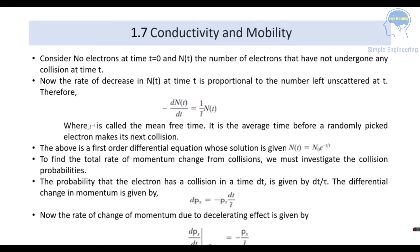To find the rate of momentum change from collisions, we check the collision probabilities. The probability that an electron has a collision in time dt is dt/τ. The differential change in momentum is dp_x = −p_x·dt/τ̄. Therefore, the rate of change of momentum due to collisions is dp_x/dt = −p_x/τ̄.